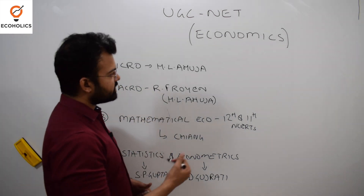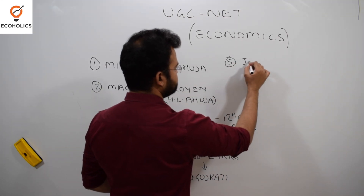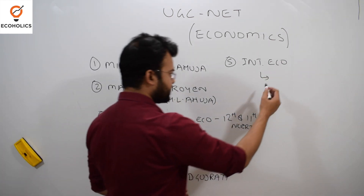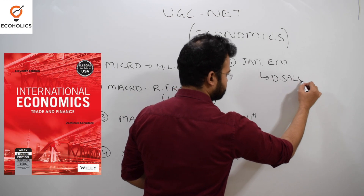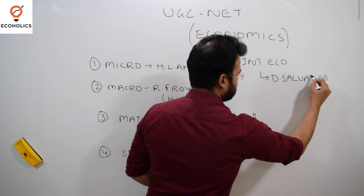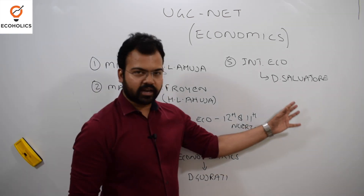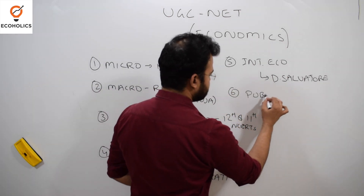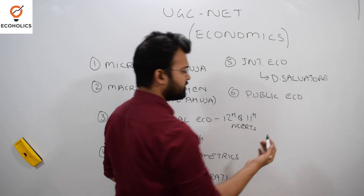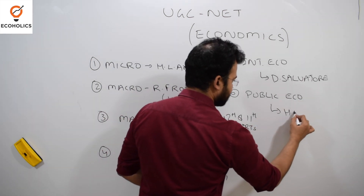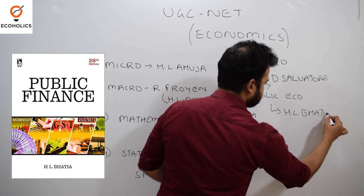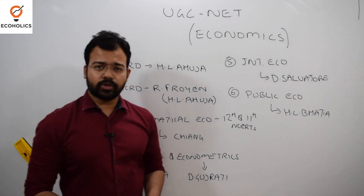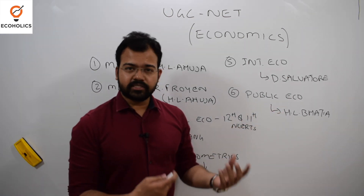The fifth part is International Economics. For international economics, there is only one book referred to as the Bible, and that is Dominic Salvatore. You will find all the topics mentioned in the syllabus in Dominic Salvatore. The sixth important area is public economics, generally known as public finance. For that, there is one book by H.L. Bhatia. It is a pretty good book, though it has some irrelevant topics — just read the topics mentioned in the syllabus.